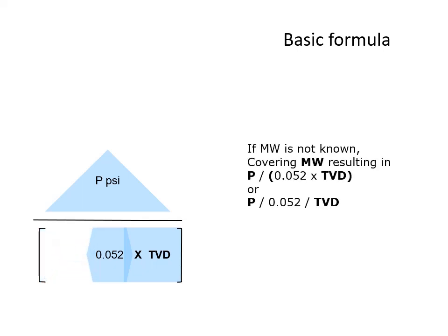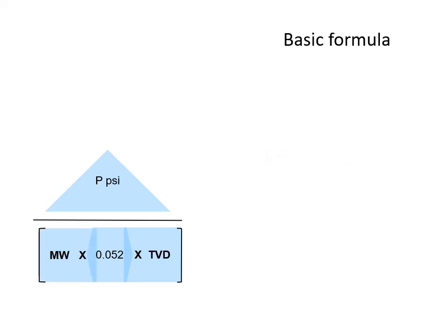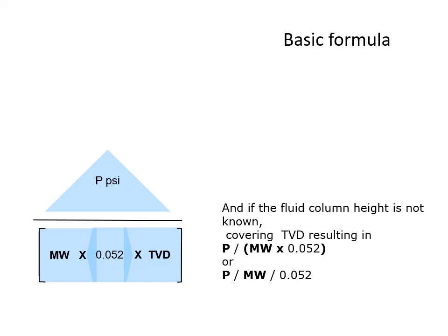If mud weight is not known, then covering mud weight from the diagram will show P divided by 0.052 multiplied by TVD. And if the fluid column height is not known, then covering TVD results in P divided by the multiplication result of mud weight multiplied by 0.052, or P divided by MW divided by 0.052.